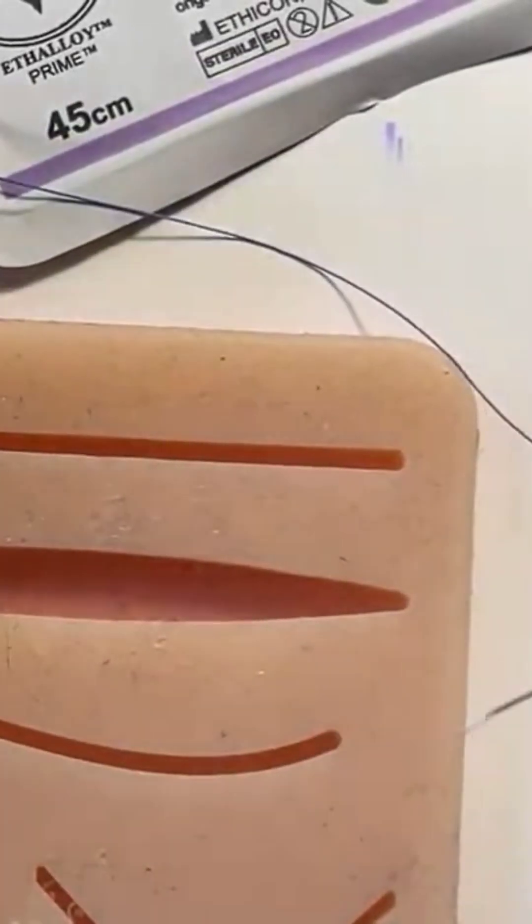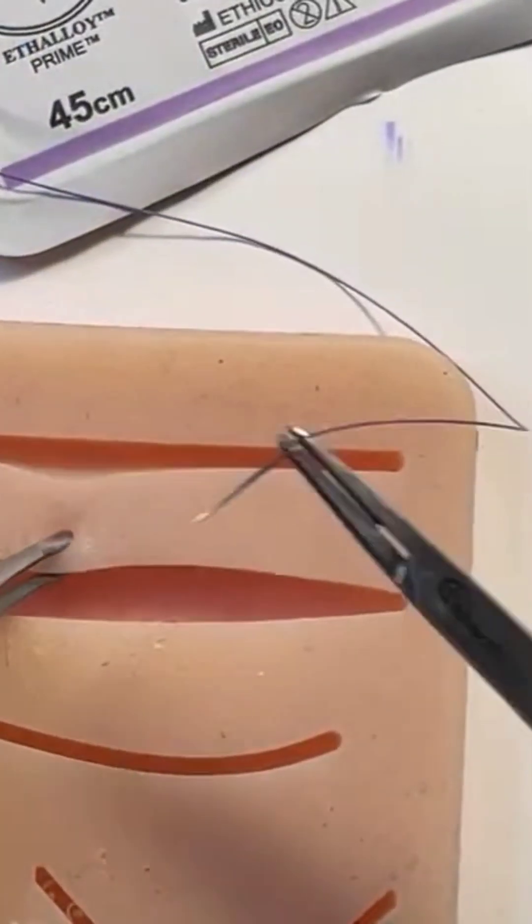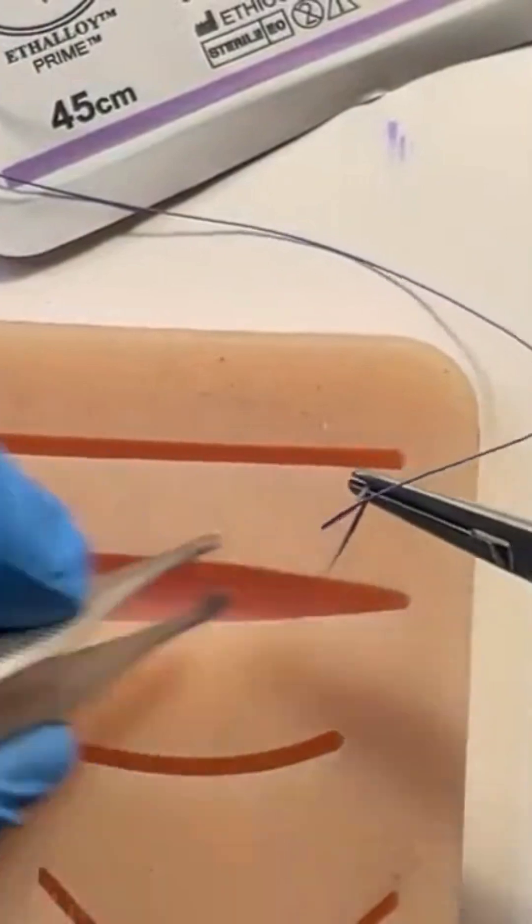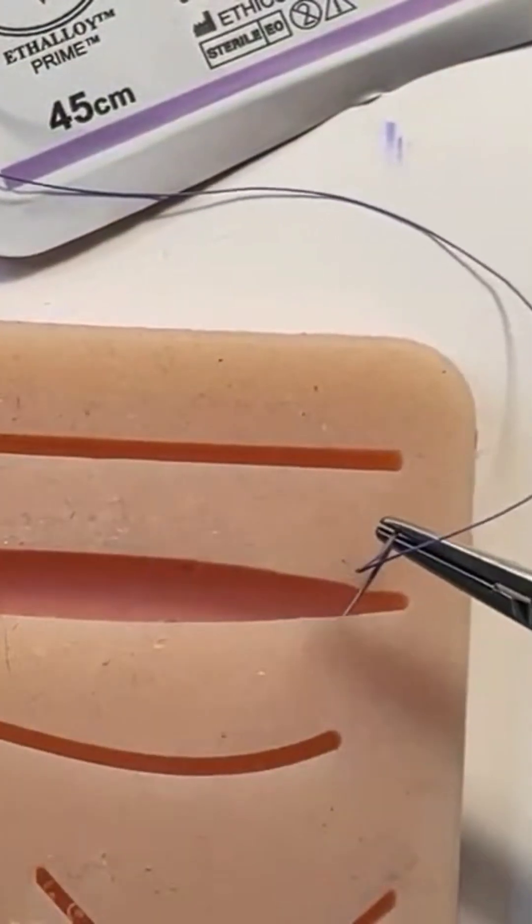The next tip, which was really key, was that I didn't start in the middle of the wound. I started at the apices, where it was slightly under less tension.